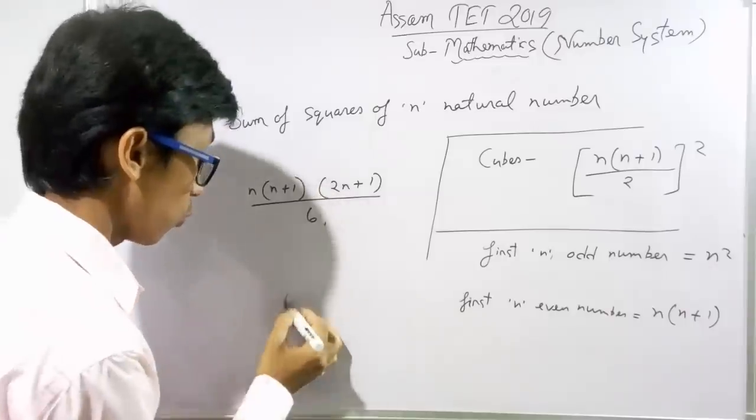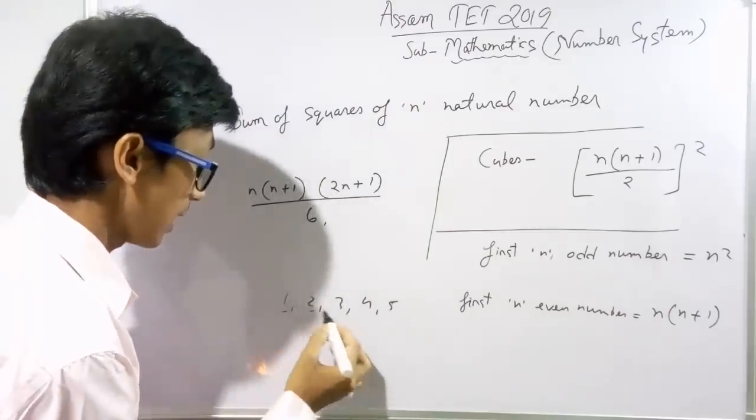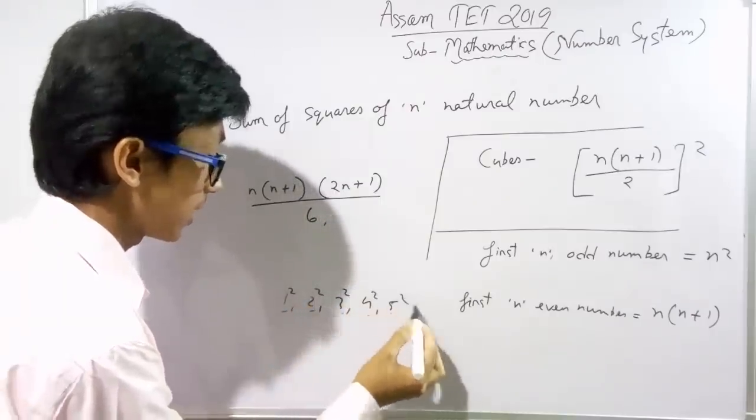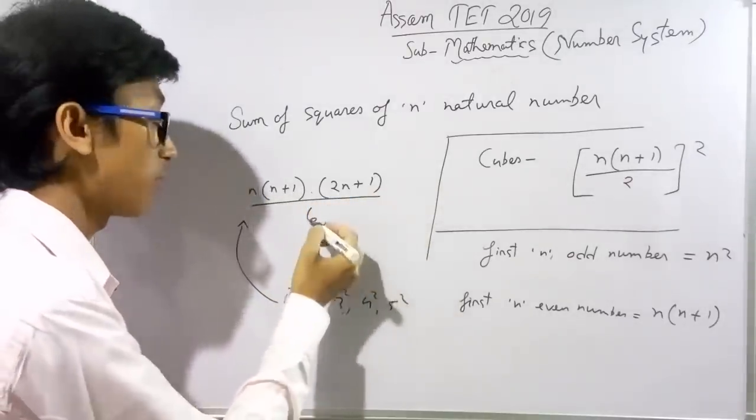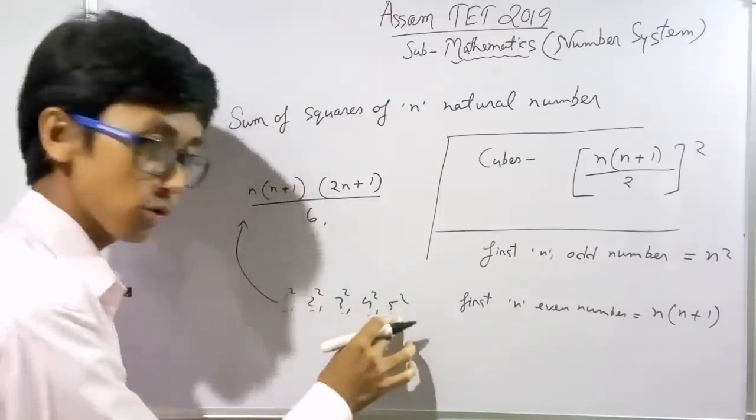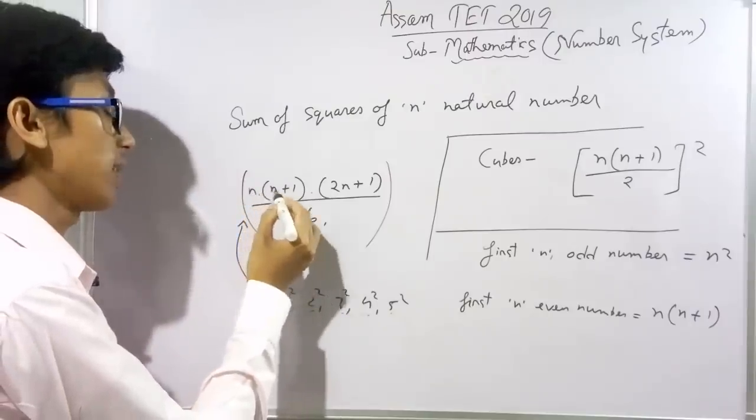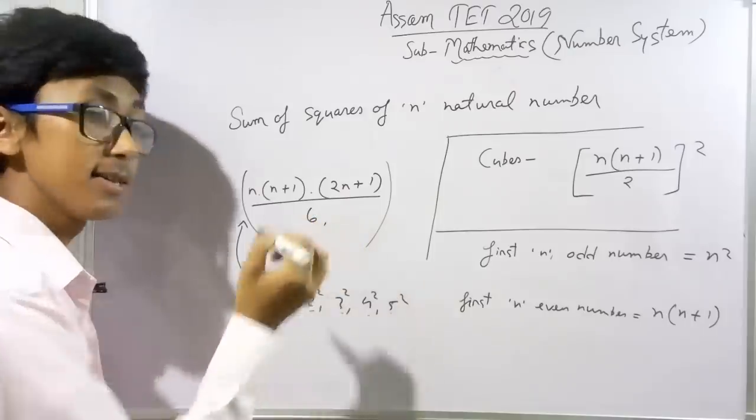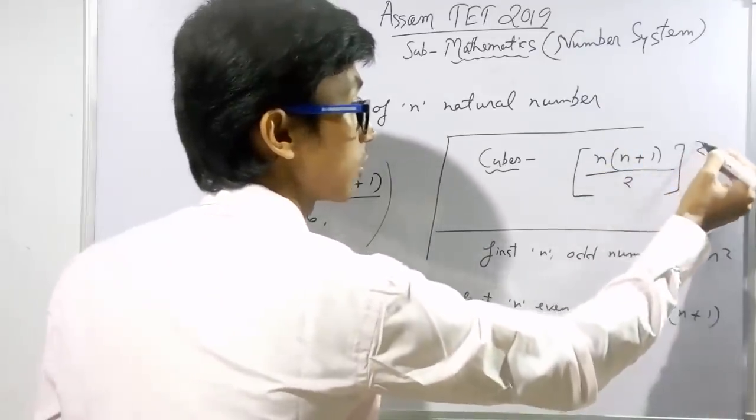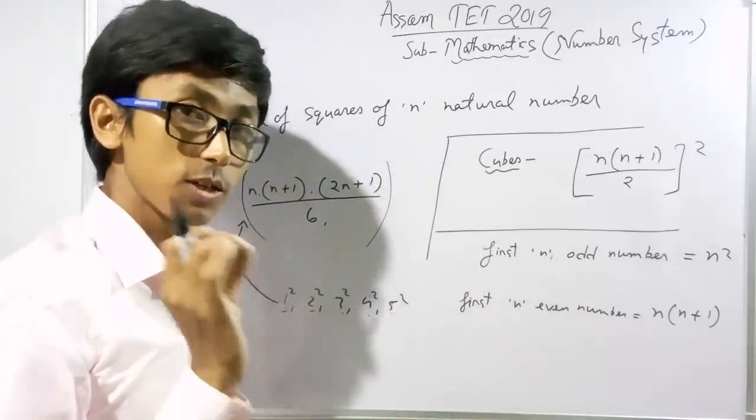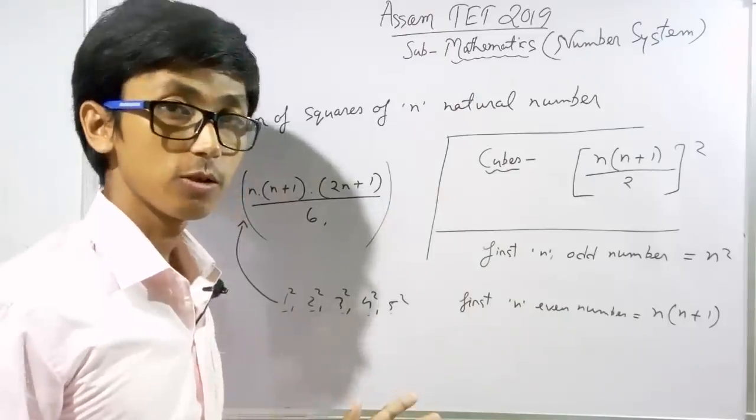For the sum of squares, the formula is n times n plus one times two n plus one divided by six. So the formula for sum of squares is n(n+1)(2n+1)/6. This is an important formula to remember.